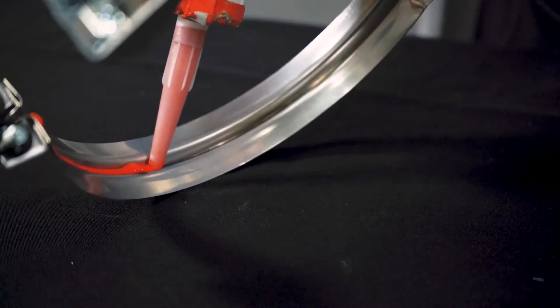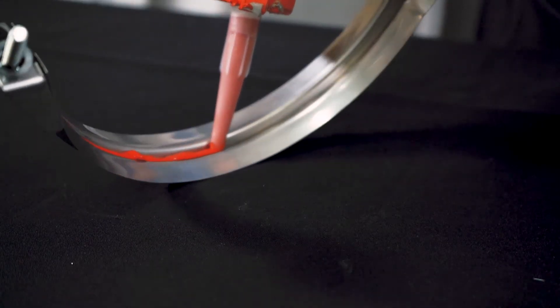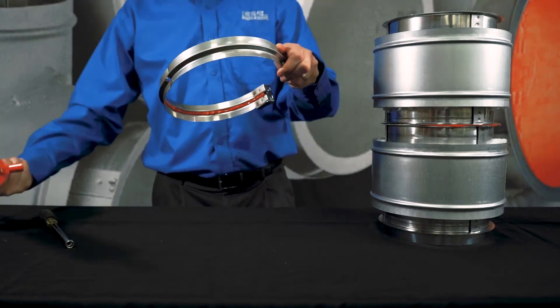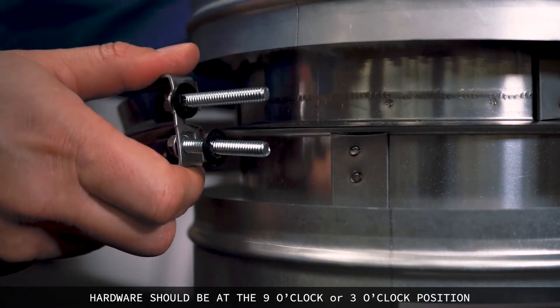Fill the channel of the flange band with the same type of sealant that was used on the flange portion of the vent. Place the band around the flange.